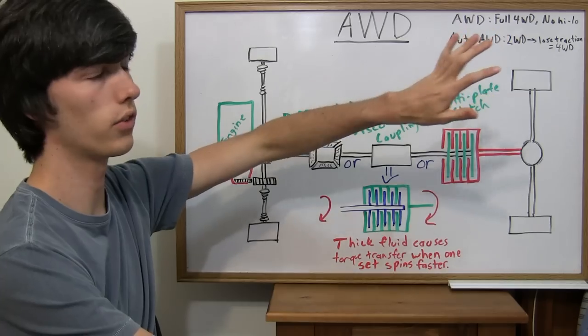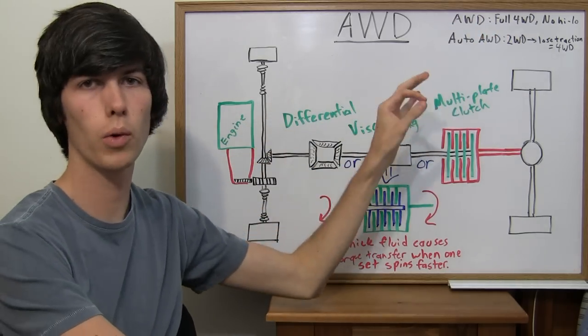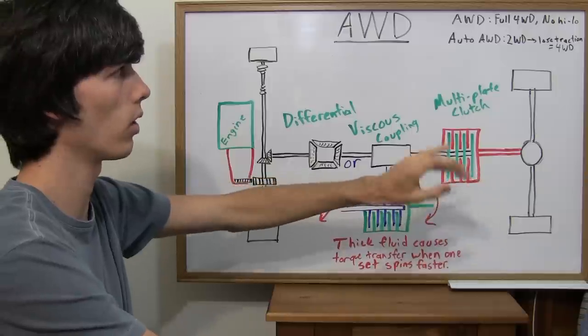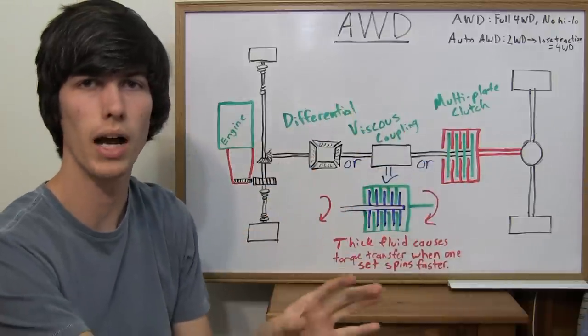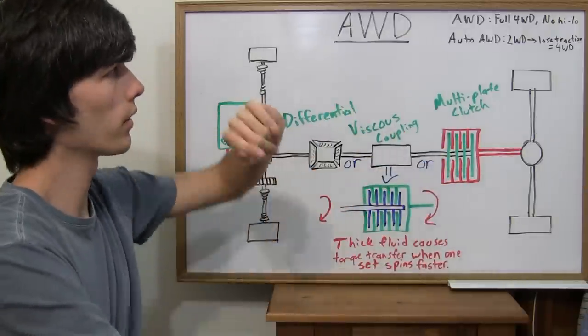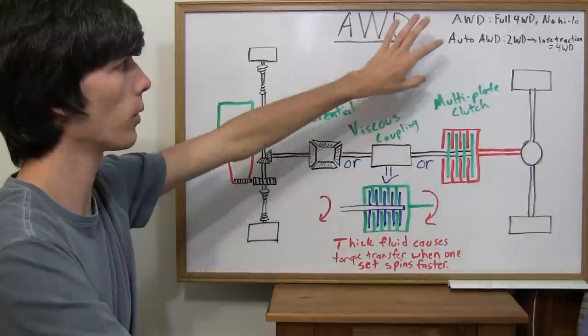So the difference between all-wheel drive and four-wheel drive: all-wheel drive is just like full-time four-wheel drive, if you watch my other video on four-wheel drive, except there's no selection between high and low gear.